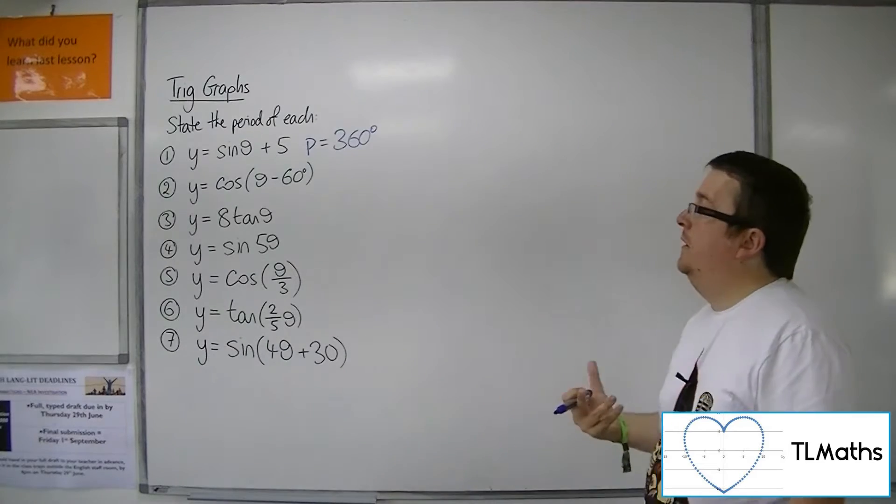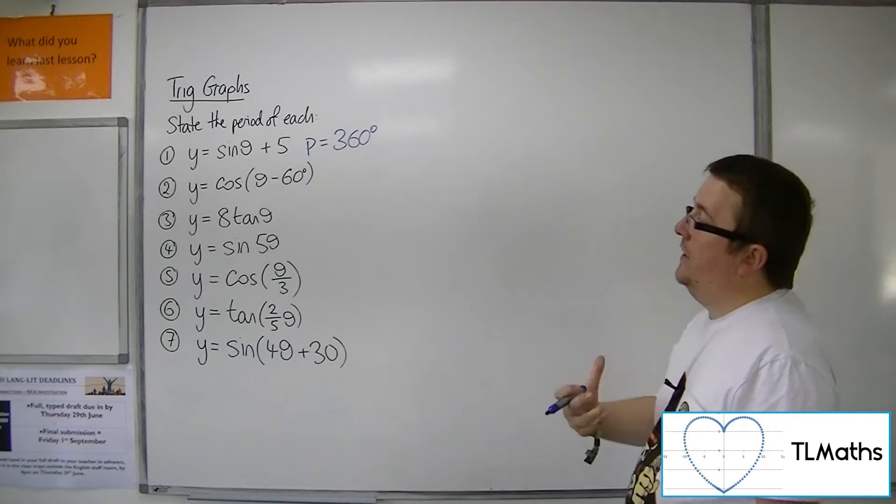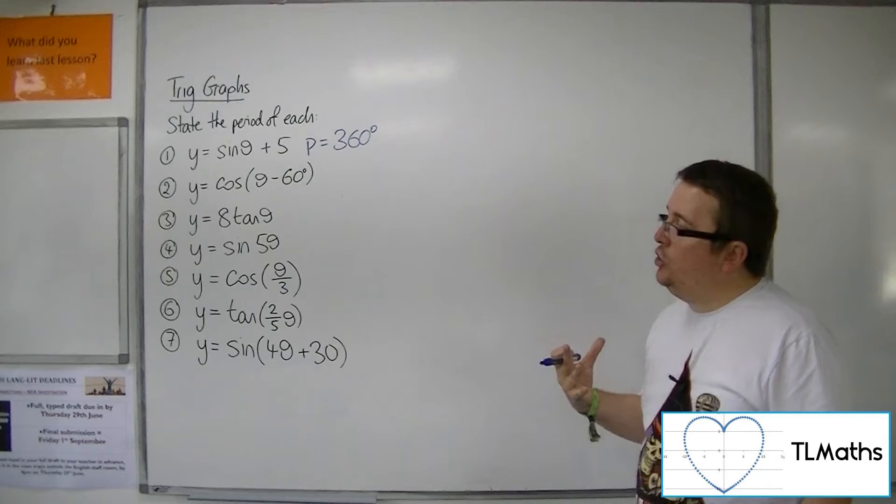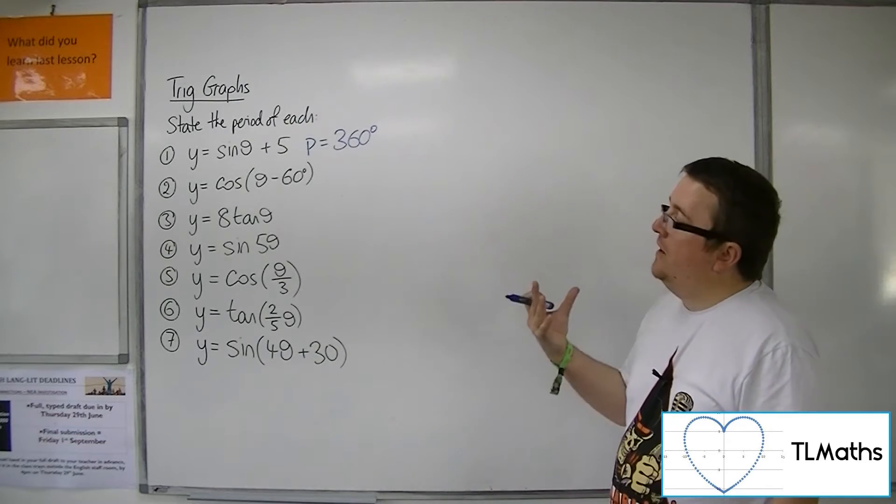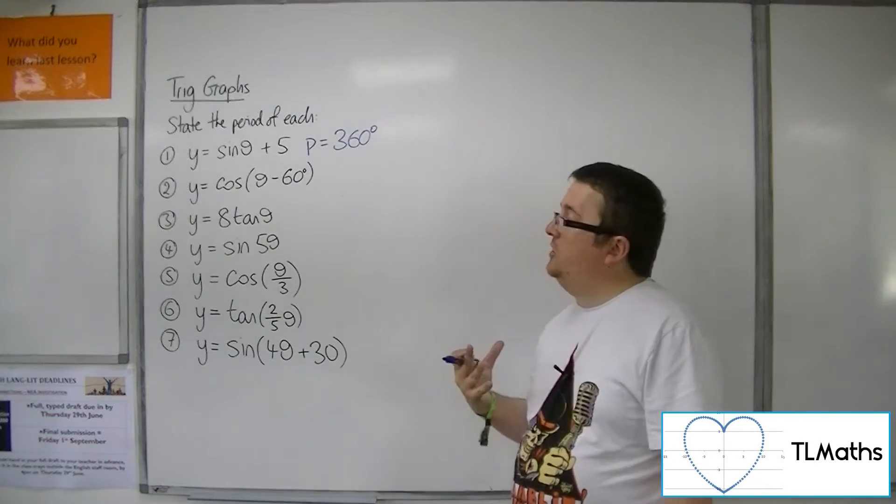Now for y equals cos of theta minus 60 degrees, that's a translation that will move it 60 degrees to the right.